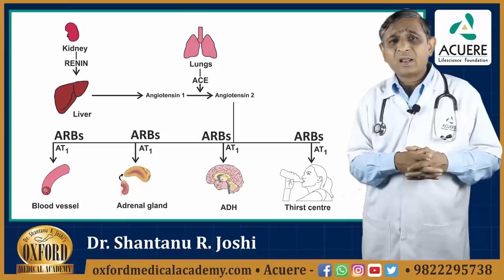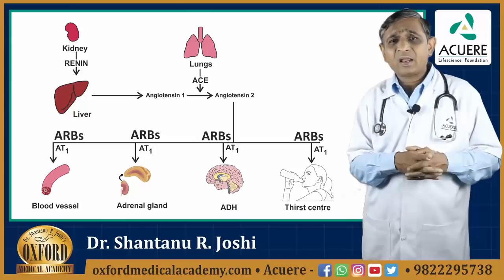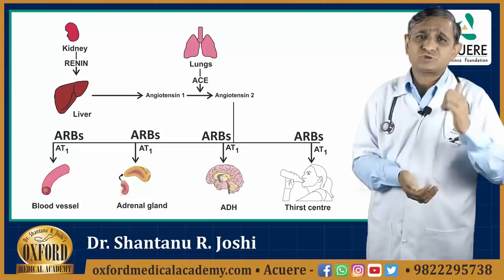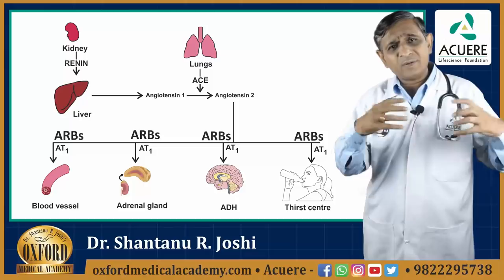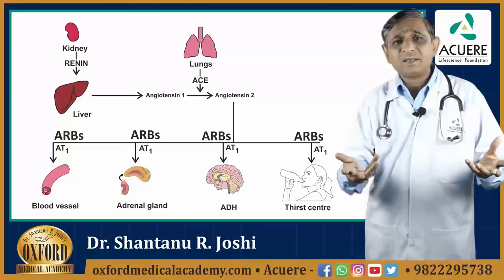The same angiotensin-2 also increases ADH secretion from the posterior pituitary — anti-diuretic hormone. This anti-diuretic hormone has a similar effect: it also retains sodium and water, causing blood volume to rise, cardiac output to increase, and systolic blood pressure to rise again.